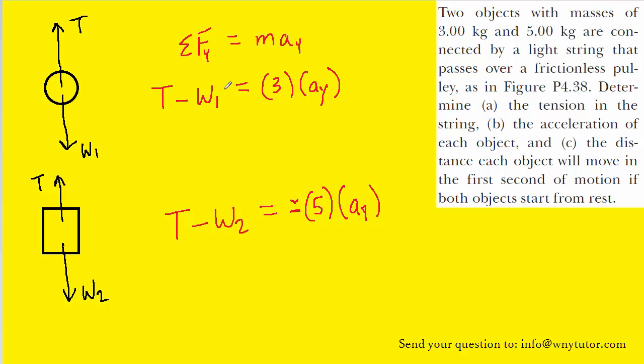Next, we can substitute in expressions for W1 and W2. In both cases, those are equivalent to the mass of the object times the gravitational constant. We'll do a similar thing for the square object. Why don't we go ahead and fill in the masses and 9.8 for the gravitational constant.